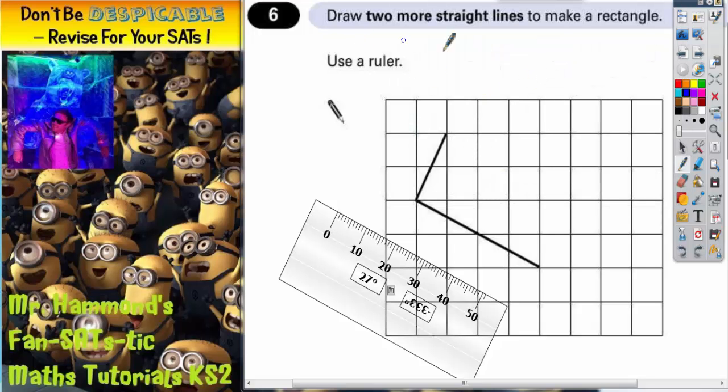Question six. Draw two more straight lines to make a rectangle. Use a ruler.